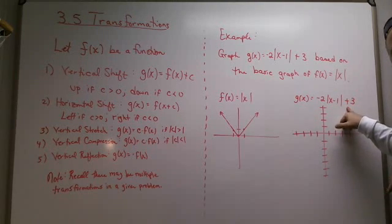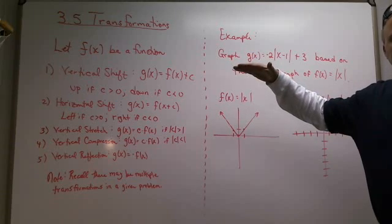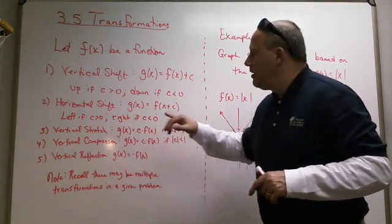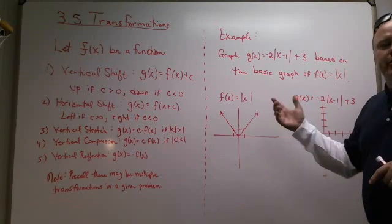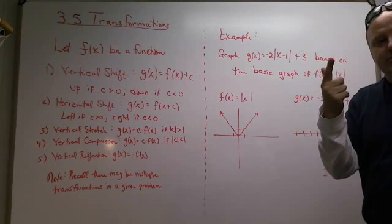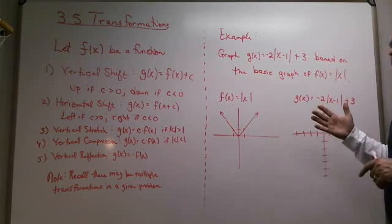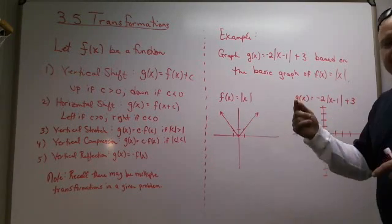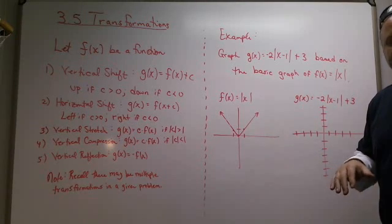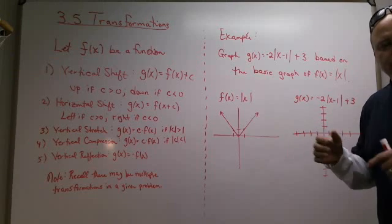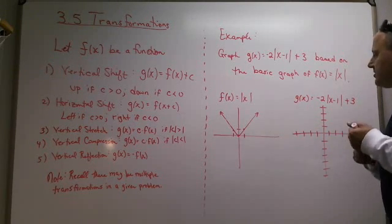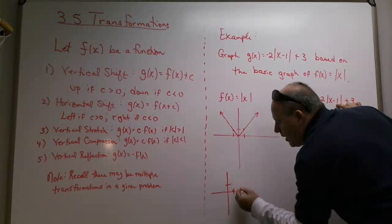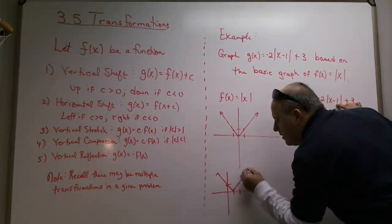If you look at the plus three, that's the vertical shift, so the graph is going to go up three units. The minus one, since it's negative, it's going to go right one unit. The negative two — well, the negative is going to turn it upside down, that's a vertical reflection. And the two is going to stretch it out. So let's put it in order: the minus one means one unit to the right, the two is going to stretch it, the negative is going to turn it upside down, and then the plus three is applied last — working your way inside to the outside.